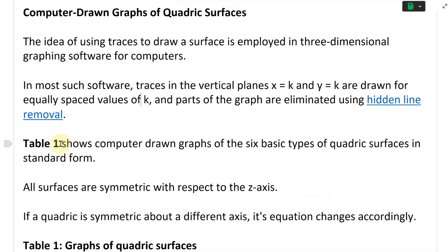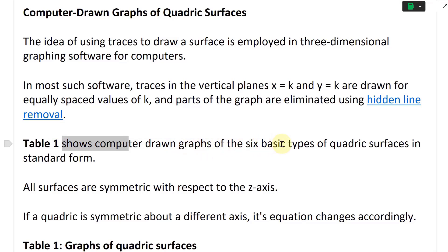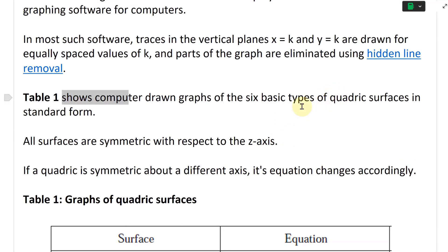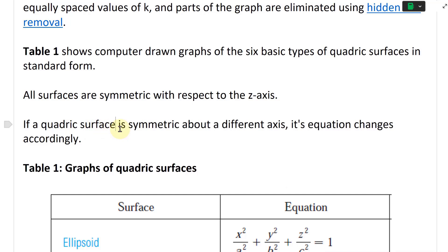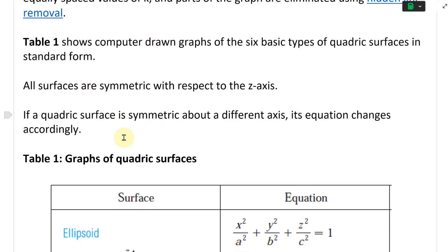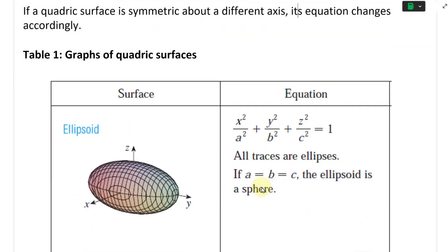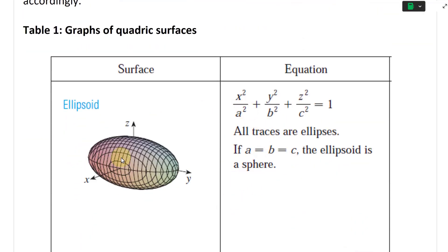Table one shows computer-drawn graphs of the six basic types of quadric surfaces in standard form. All surfaces are symmetric with respect to the z-axis. If a quadric surface is symmetric about a different axis, its equation changes accordingly — just shift things around so it's symmetric about the other axis.